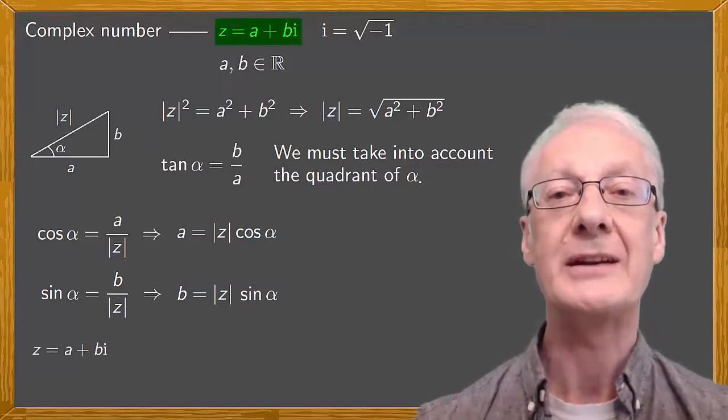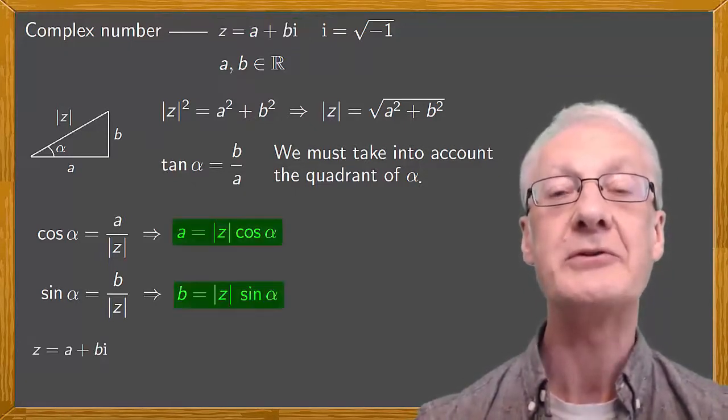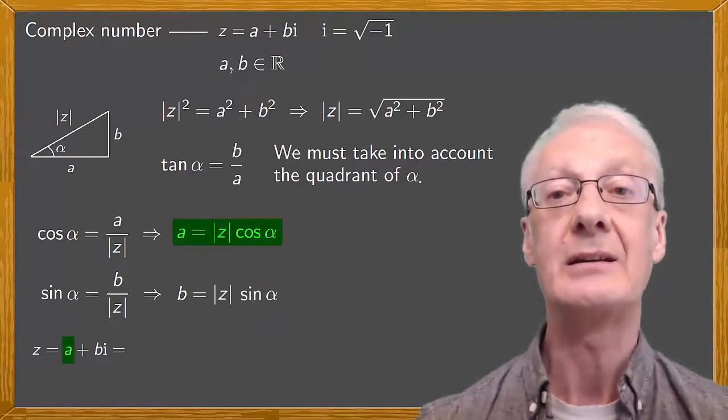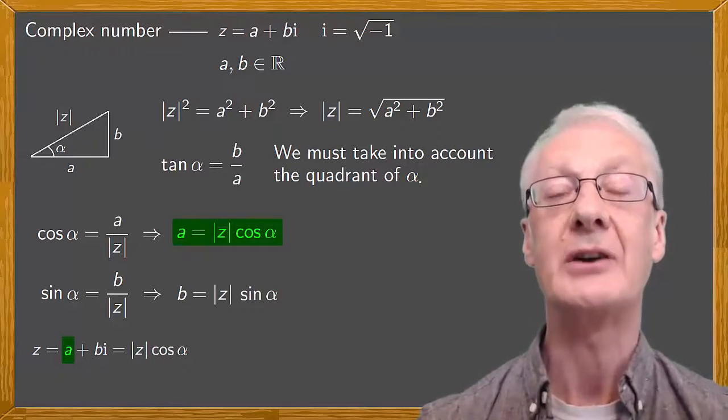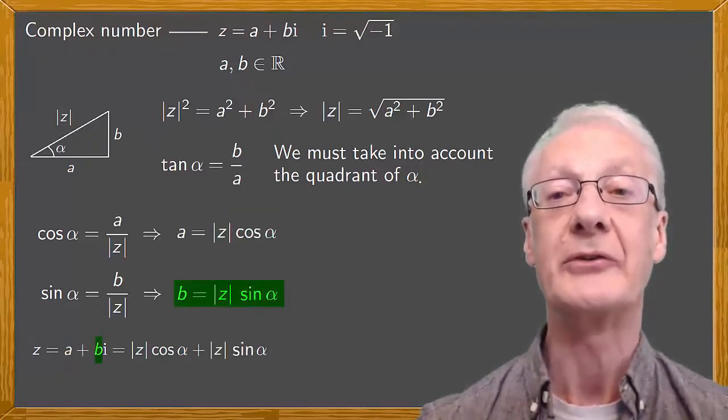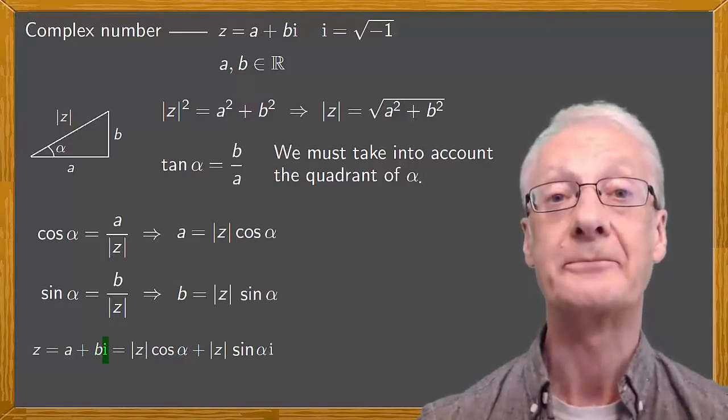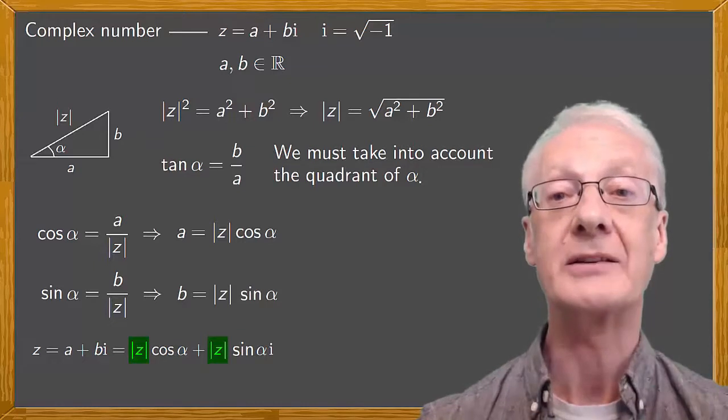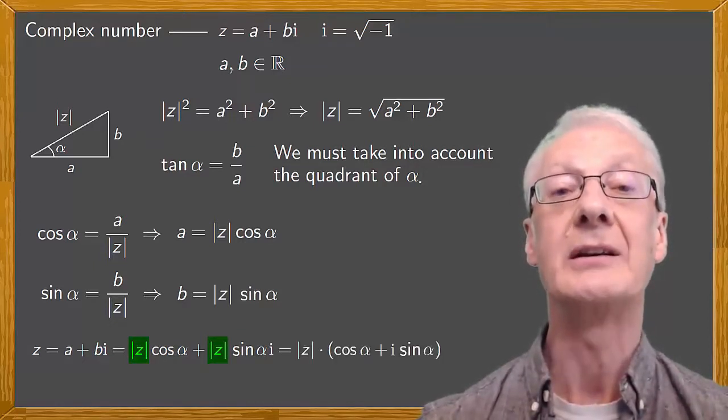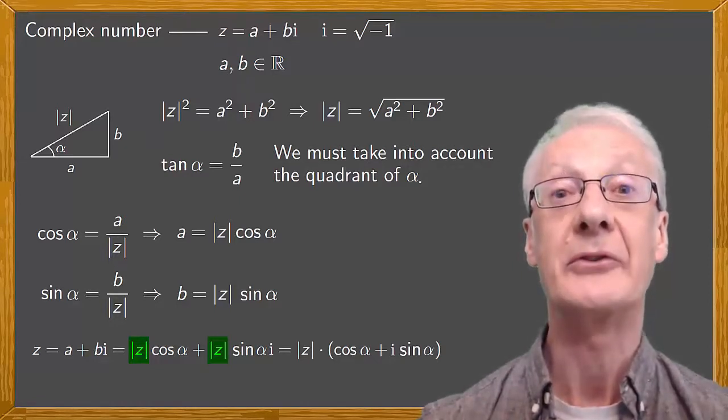Remember that z is a plus bi. So let's substitute in this the expressions we've obtained for a and b. We then get a, which is the modulus of z times cosine alpha, plus b, which is the modulus of z times sine alpha times i. Then we take out the common factor, the modulus of z, to get the modulus of z times cosine alpha plus i times sine alpha.